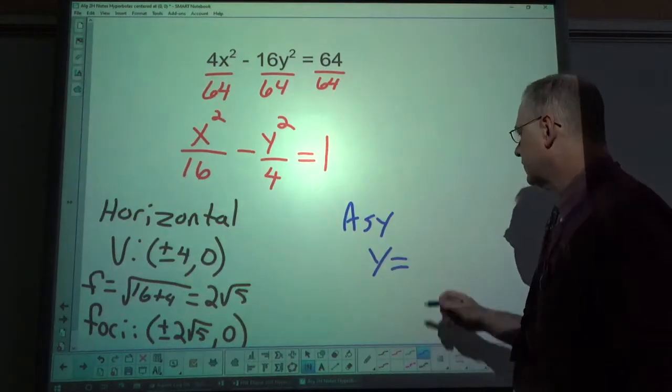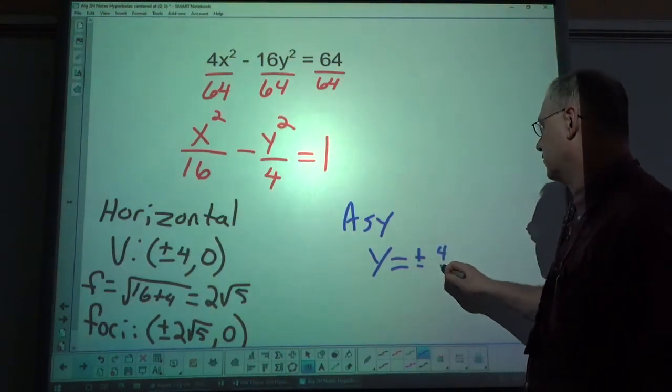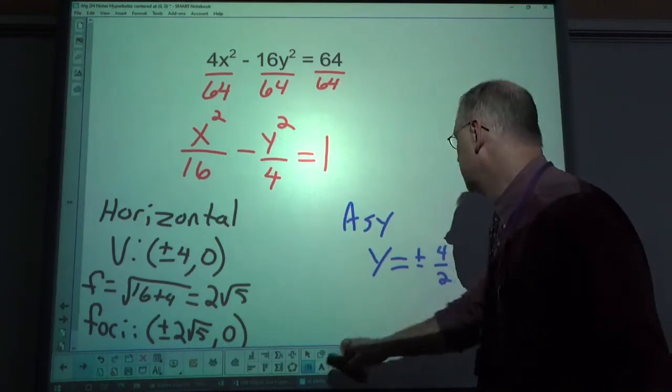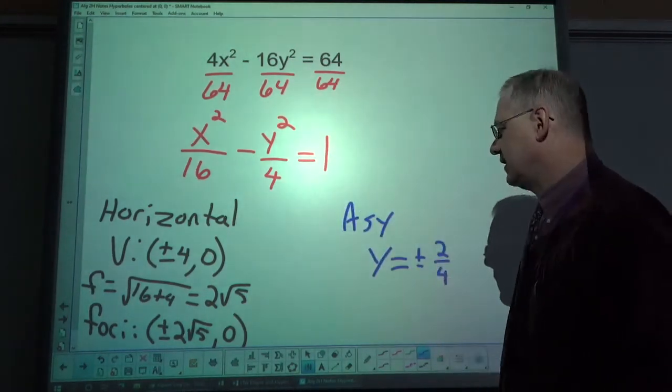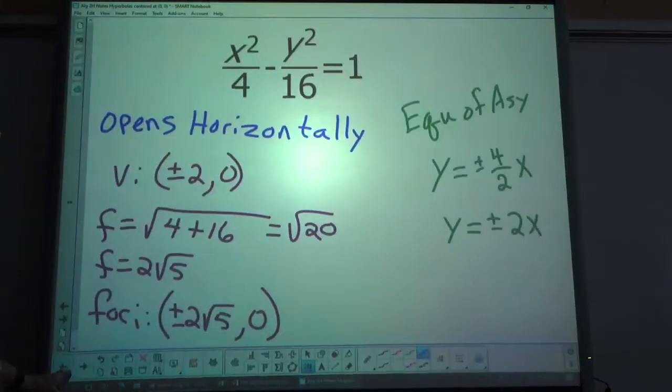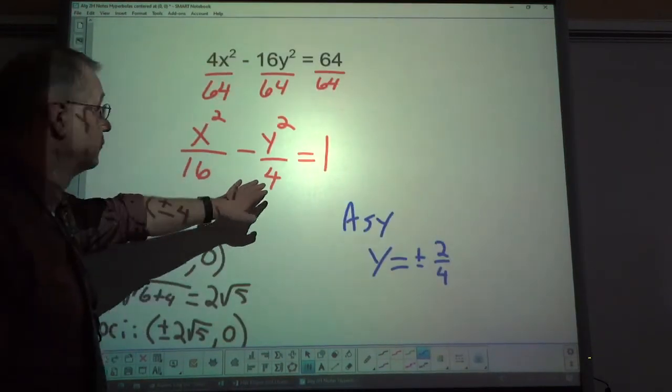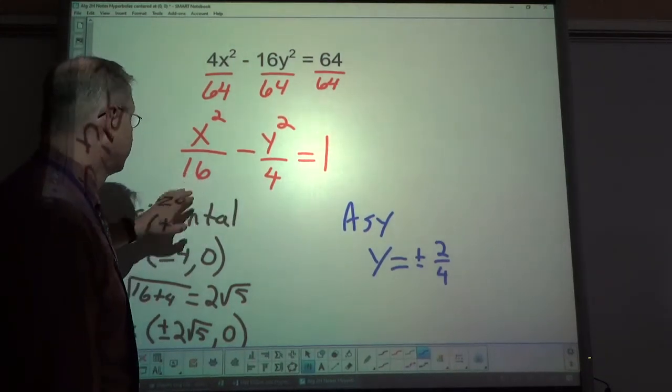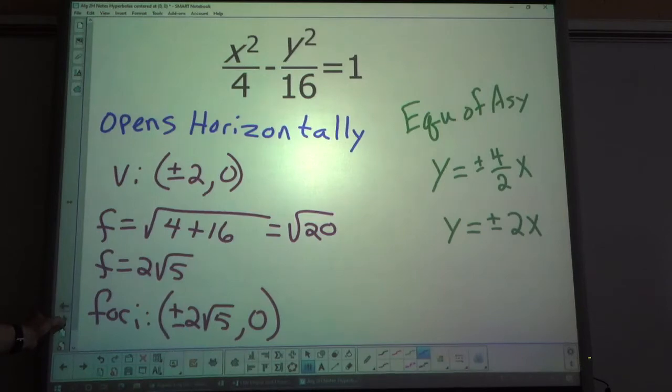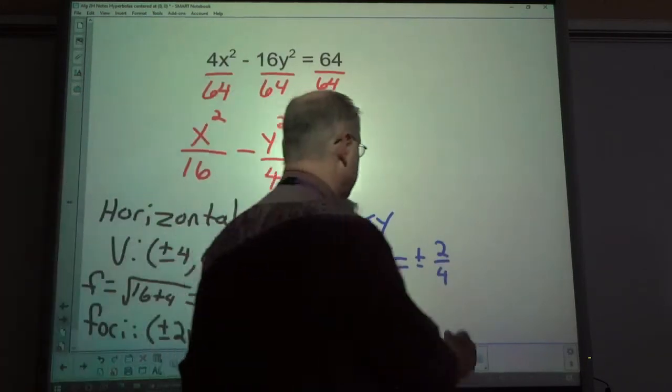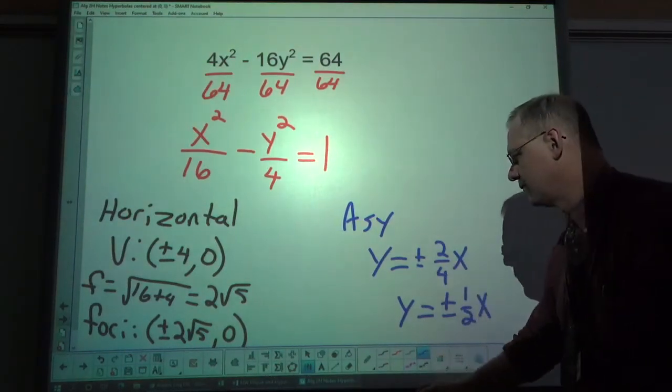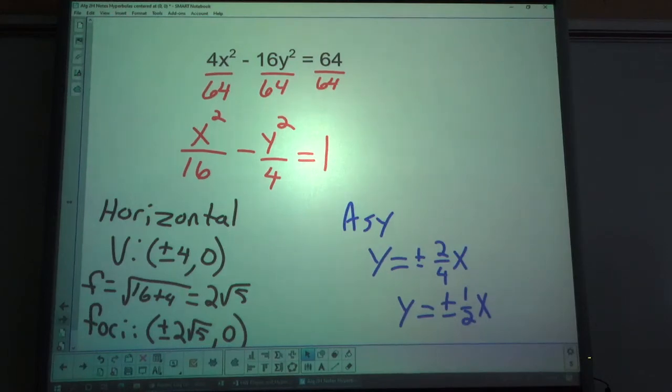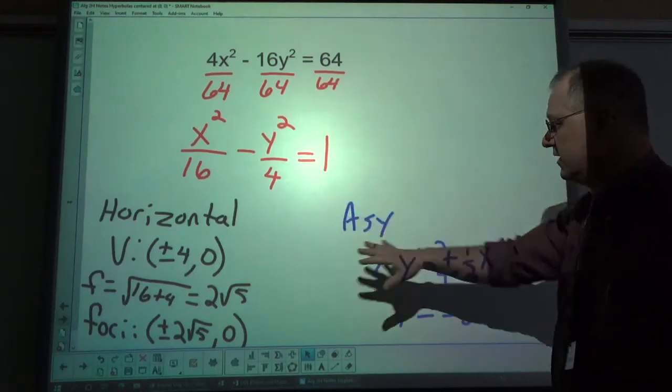And the asymptotes, y equals plus, minus 4 over 2, no, not 4 over 2, 2 over 4, b over a. I want to make sure I didn't make that mistake earlier. I have that correct. This time, the 4 is under the y, and the 16 is under the x. Just double-checking myself. x plus, minus 1 half x. All right. There is your standard form and the basic form.